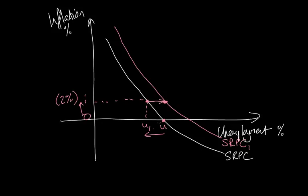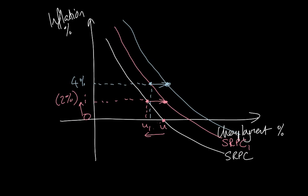This process can then happen again — the government may adopt another policy to try to reduce unemployment, which leads to inflation of say four percent. Again we go through the same process: initially employees and businesses think they are better off because the number on their paycheck is higher, the actual revenue they're receiving is higher — but it's an illusion, it's not real. After a while that money illusion disappears and we move back, ending up with a third Phillips curve — SRPC2 — and so on. We get more and more inflation but no significant improvement in unemployment.